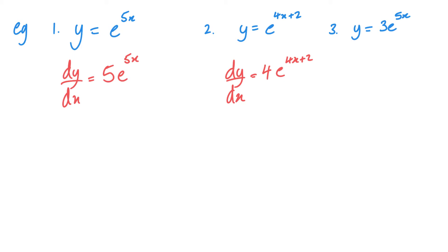And then the final one, y equals, so the e to the 5x is going to stay the same. When I differentiate the 5x, I get 5. 5 times the 3 is going to give me 15. And that's how easy it is to differentiate exponentials.